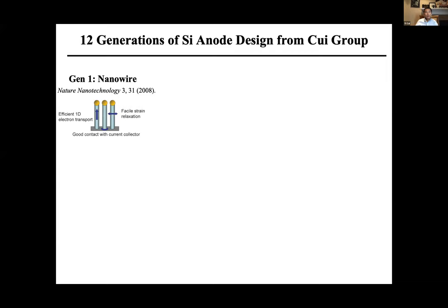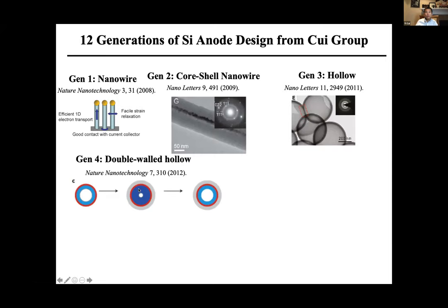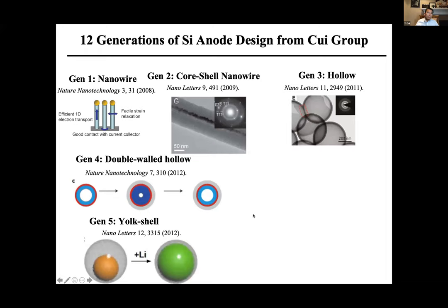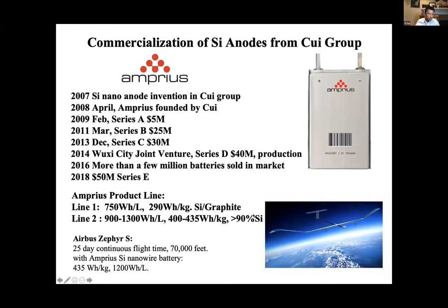With all this understanding over the years, we have been designing materials from nanowires to coaxial wires, to hollow structures that relax strain better, and to double-wall hollow structures that try to build a stable interface — forcing silicon volume expansion inward while the outer surface stays stable, enabling a stable solid electrolyte interface. The industry is now pushing hard to utilize silicon to build high-energy-density batteries, including companies like Tesla. In 2008, I founded Amprius to commercialize silicon nanostructures.